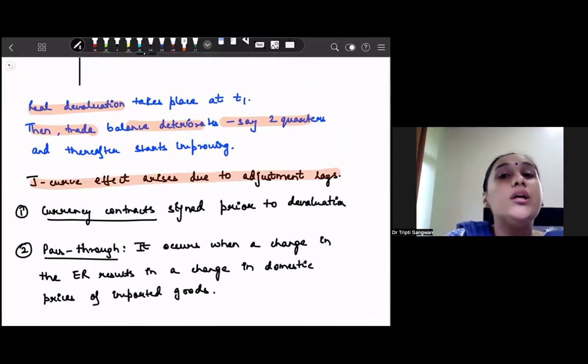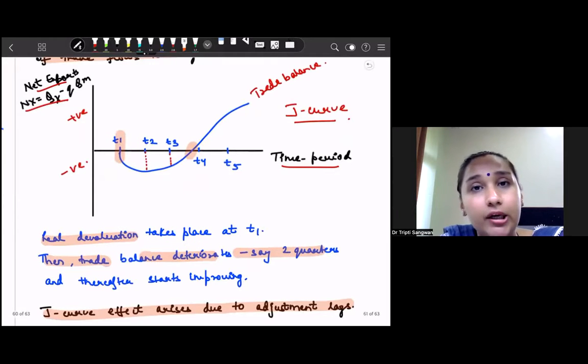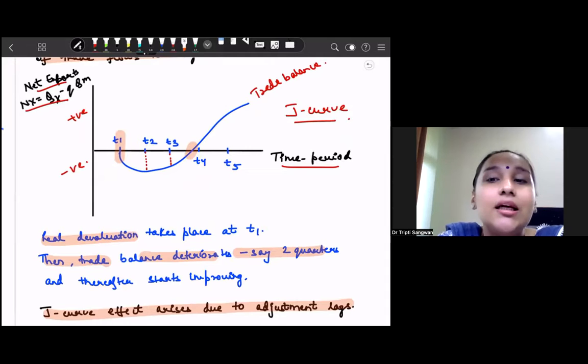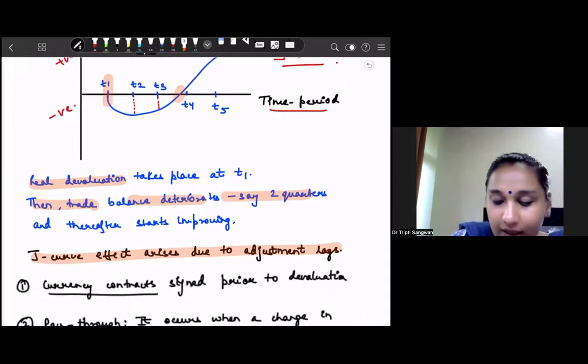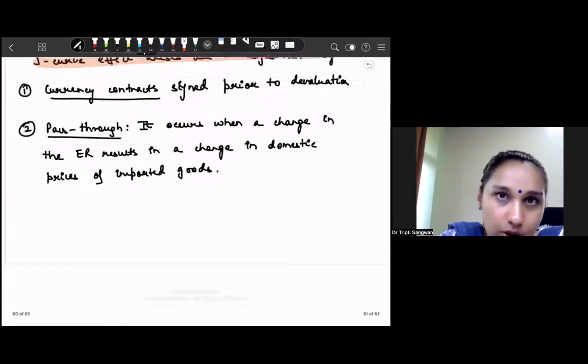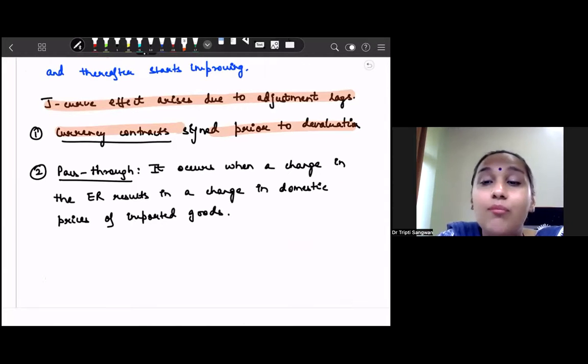So we say that J-curve effect arises due to the adjustment lags. Now what are these adjustment lags? When devaluation happens in time period one, so in time period two our trade balance didn't improve. So there are certain adjustment lags. First, we talk about currency contracts signed prior to the devaluation. So the contracts we have signed earlier, on the basis of that, if depreciation happens, actually our trade balance will decline further and go more into deficit.